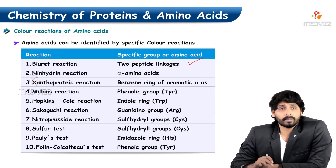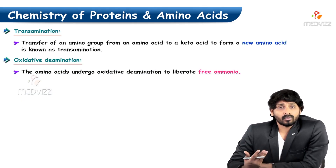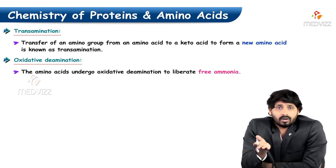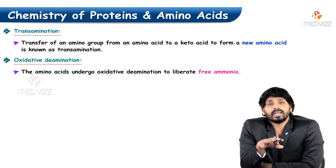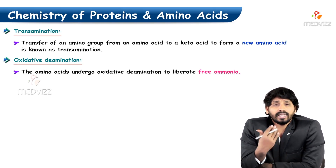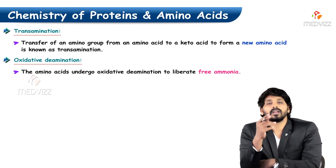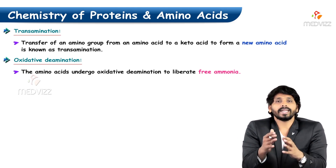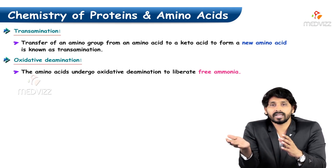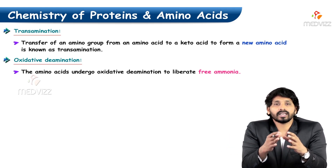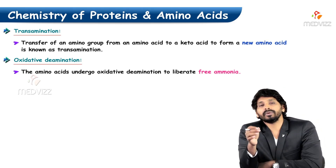Transamination reaction involves the transfer of an amino group from one amino acid to a keto acid, converting that keto acid into a new amino acid. After donating the amino group, the original amino acid becomes a keto acid. So one amino acid donates its amino group to a keto acid, forming a new amino acid, while the donor becomes a keto acid. These transamination reactions are very important.